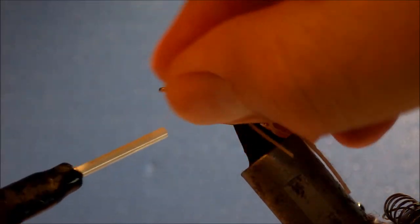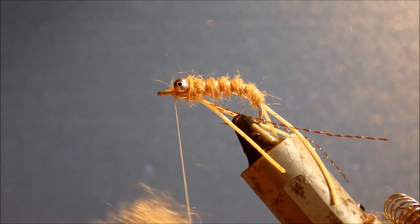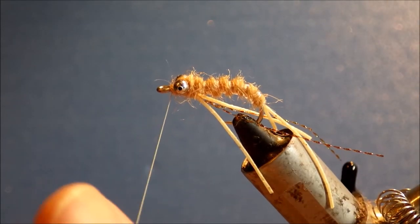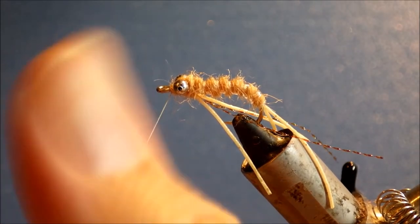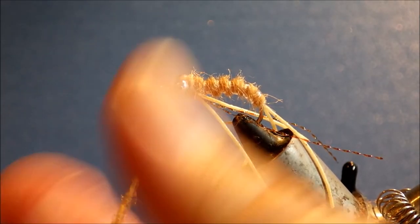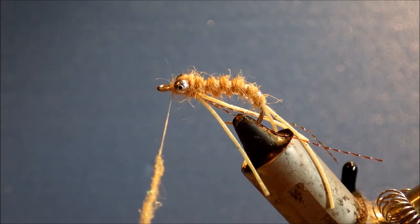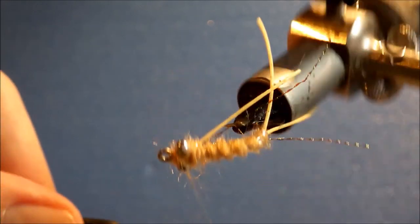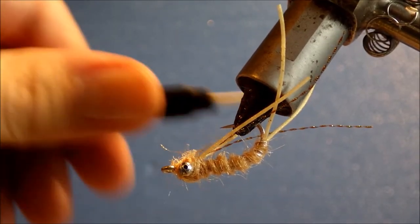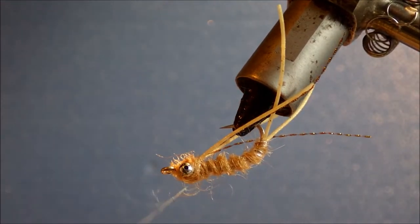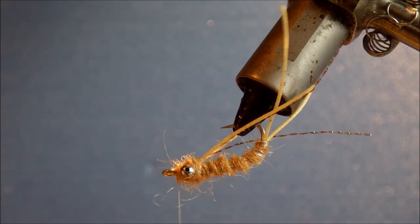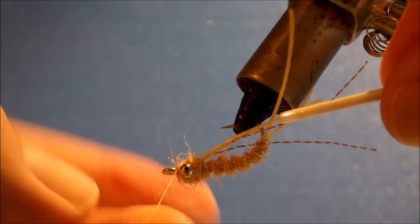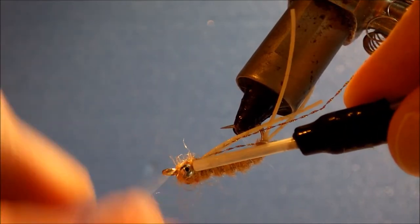And then if you're not happy you can add a bit more. I think this needs a bit more bulking up. Just maybe another turn or two here. So again back through the eyes. And then just pull everything that's going forward, pull it back. And then a quick whip finish or two.